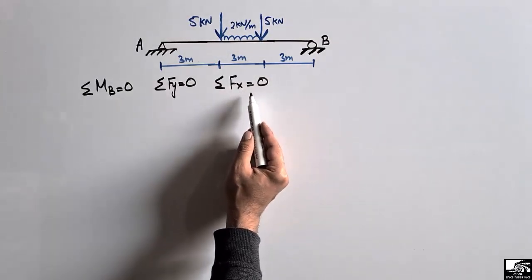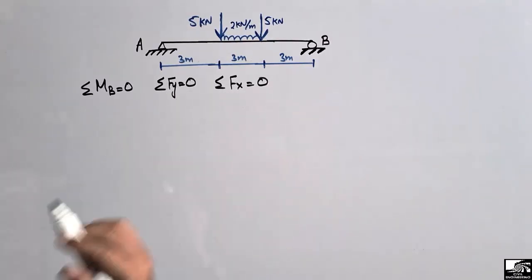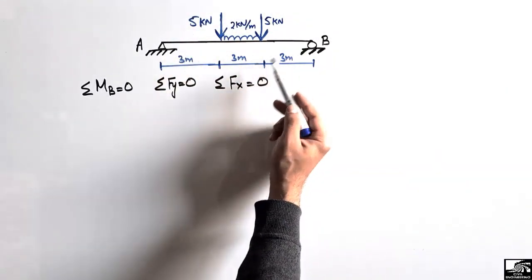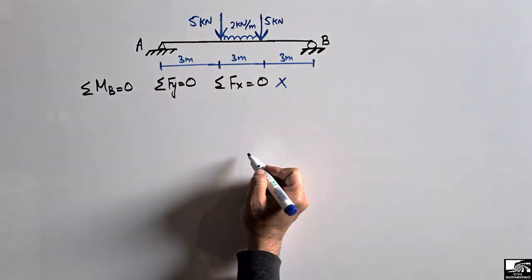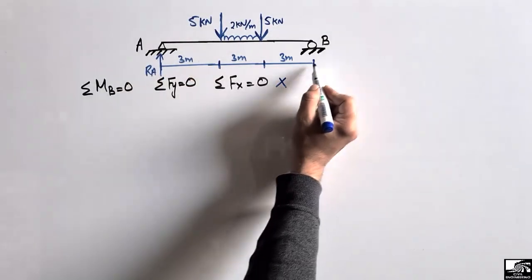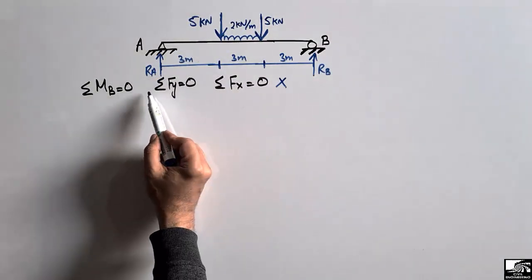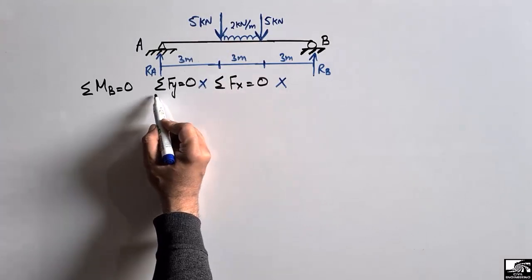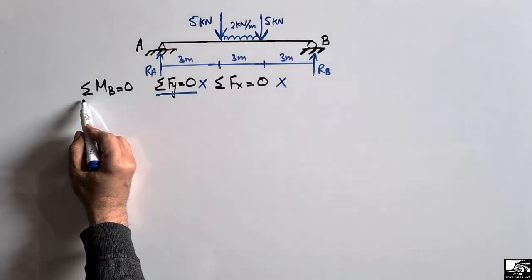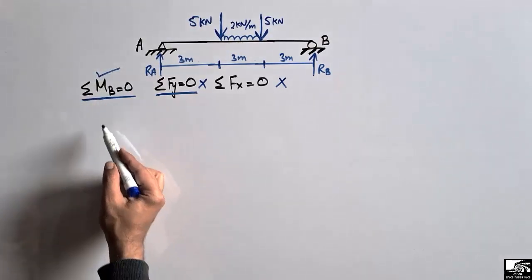There is no horizontal force acting on this beam, so we cannot use the horizontal force equation. We have two unknowns — Ra and Rb — so we cannot use the vertical force equation directly, as that can only be used when there is one unknown. Therefore, we must use the moment equilibrium equation.